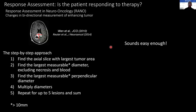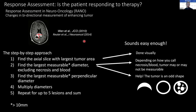So what is the RANO criteria? First, you find the axial slice with the largest tumor area, which is done manually and visually. Next, you find the largest measurable diameter and the corresponding perpendicular — the longest diameter and its corresponding perpendicular of the tumor, excluding the necrosis. The RANO measure is then the multiplicative of those two diameters. This RANO measurement is often used in clinical trials for response assessment because it's so much easier to manually accomplish than full volumetric burden, so it's a proxy measure for volume.